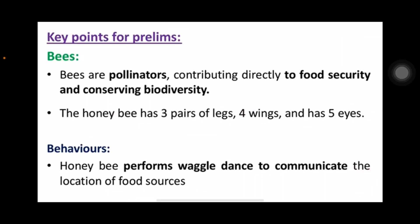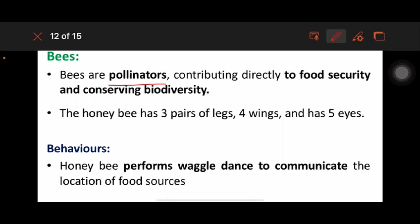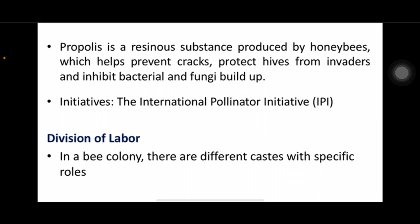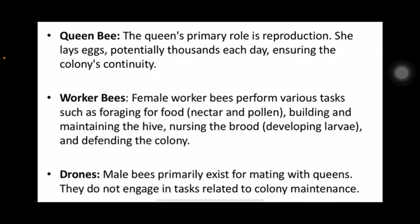For prelims: bees and pollinators contribute directly to food security and conserving biodiversity. The honey bee performs the waggle dance to communicate the location of food sources. The queen bee plays a primary role in reproduction, while the female worker bees perform various tasks.